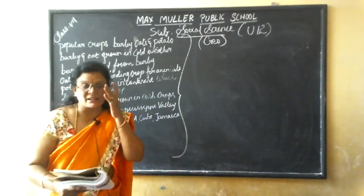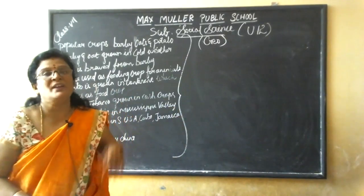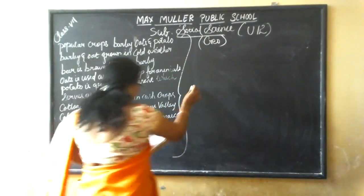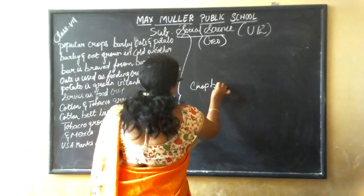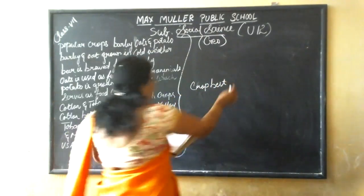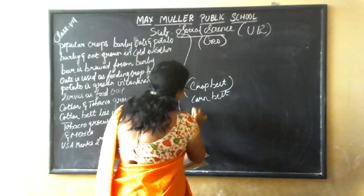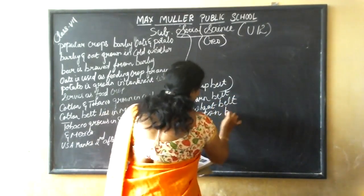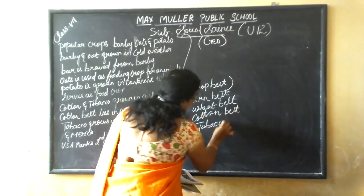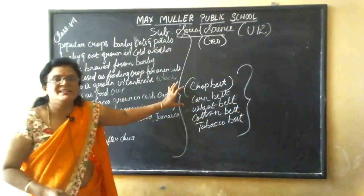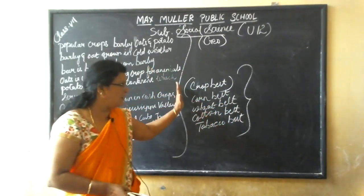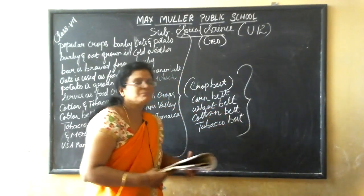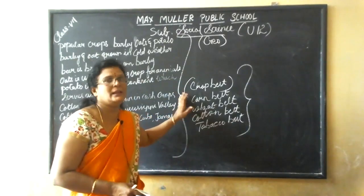North America is the largest agricultural producer in the world. The region specializes in the production of specific crops, which we can call crop belts. These include the corn belt, wheat belt, cotton belt, and tobacco belt — these are the famous productions in the North American continent.